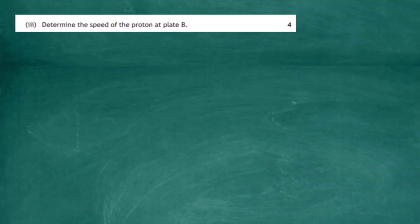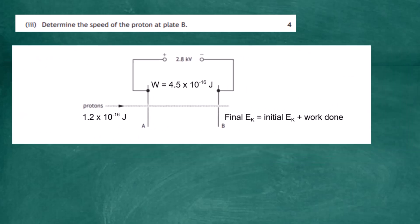Question 7, part b, part 3: determine the speed of the proton at plate B. Looking at the diagram of the electric plates, as the proton enters the electric field at A it already has kinetic energy of 1.2×10⁻¹⁶ joules. As it passes through from A to B, work is done on the proton and that energy appears as added kinetic energy. So the final kinetic energy at plate B is the sum of the initial kinetic energy plus the work done on the particle by the electric field.